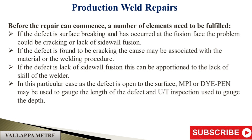If the defect is lack of sidewall fusion, this can be apportioned to the lack of skill of the welder. In this particular case, as the defect is open to the surface, MPI or dye penetrant may be used to gauge the length of the defect, and UT inspection used to gauge the depth.